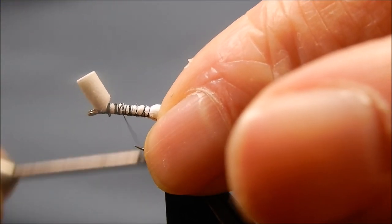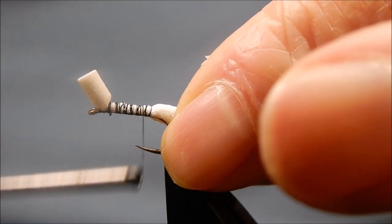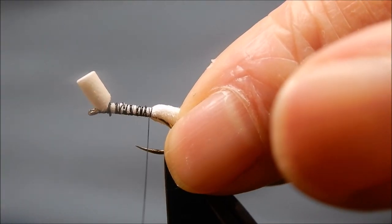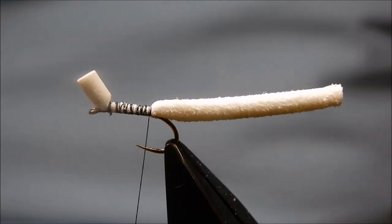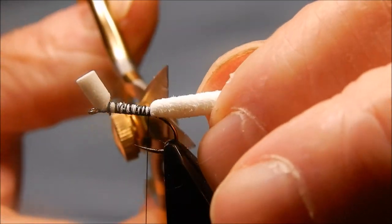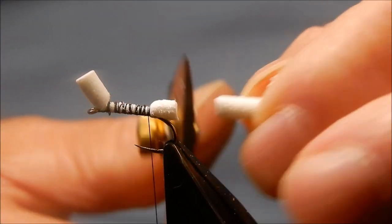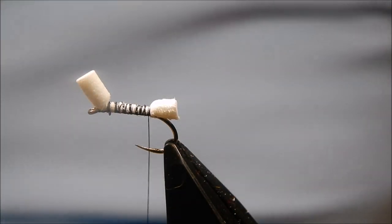The foam bodied version obviously floats. The wopsy foam floats better than any other I've used. Same procedure with the length. Cut it off flush with the bend of the hook, and the front one to match.